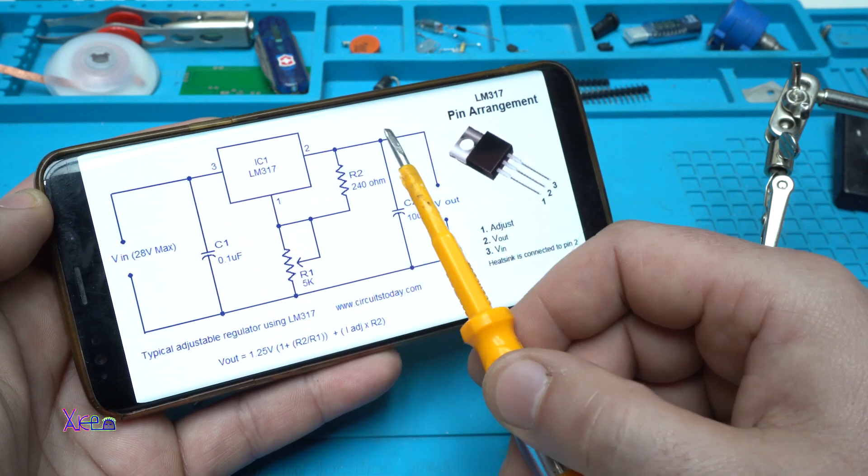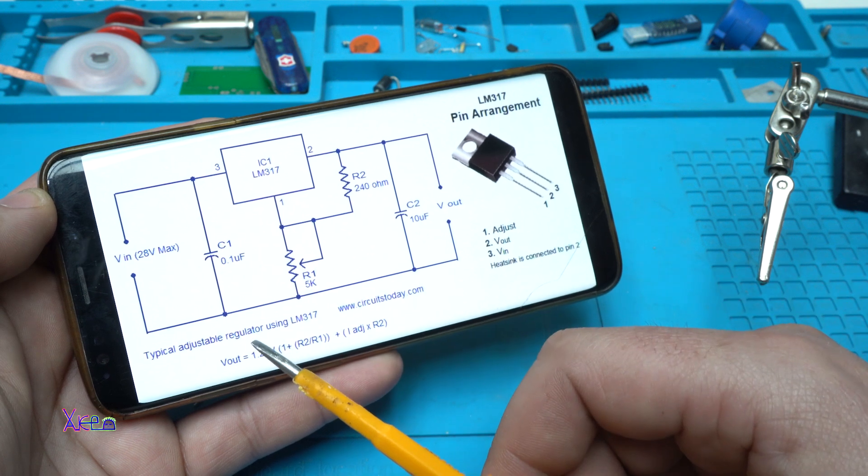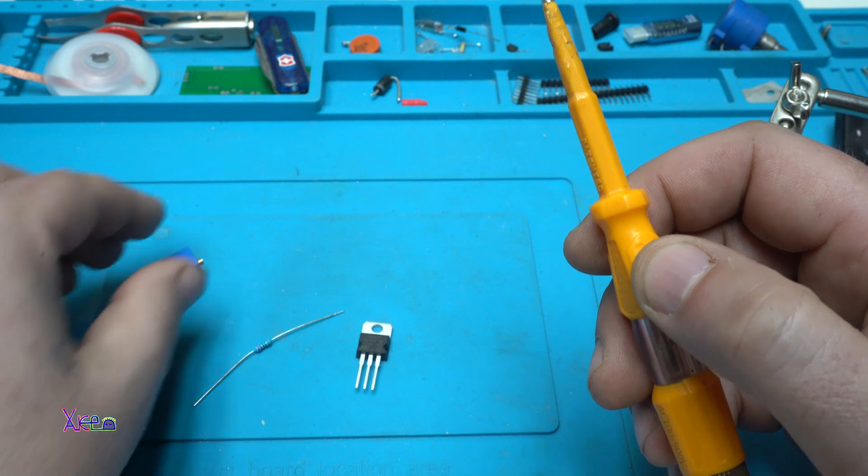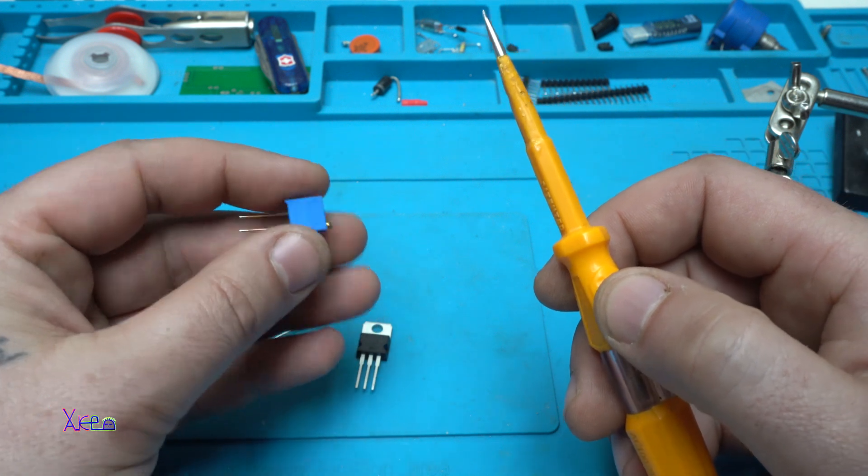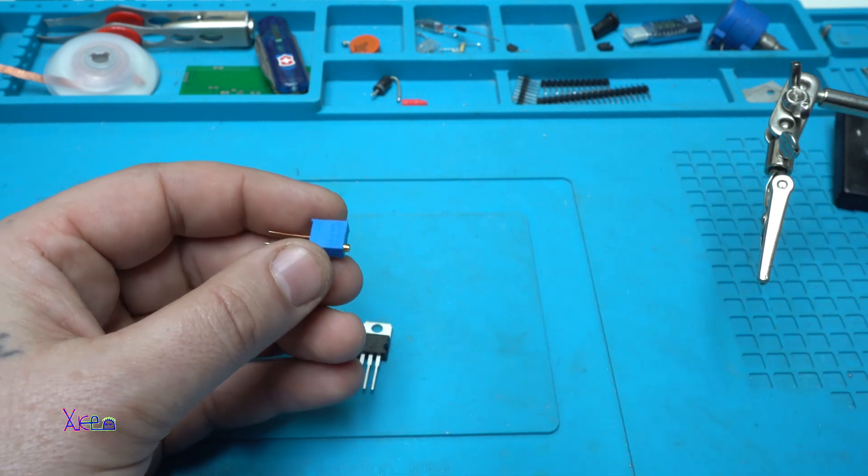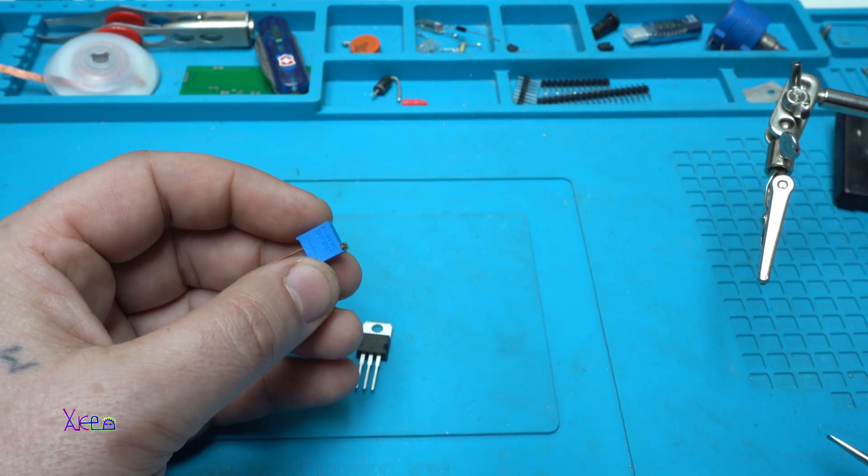On pin number 3 we have voltage in, and pin number 2 we have voltage output. That's it, simple voltage regulator using LM317. Using this electronic component will make things much better. Let's build the circuit now.